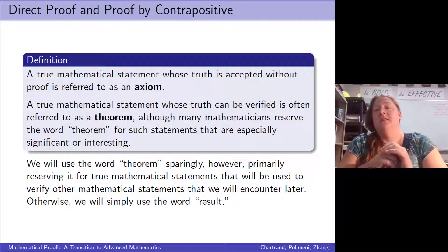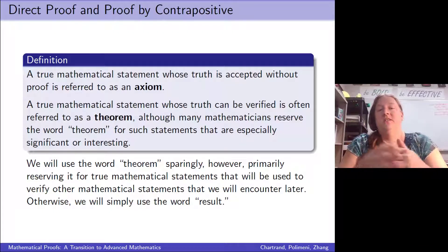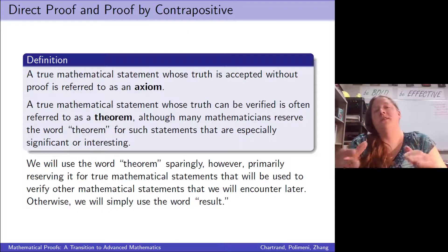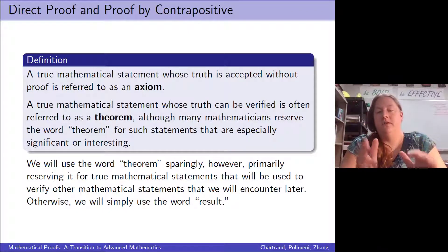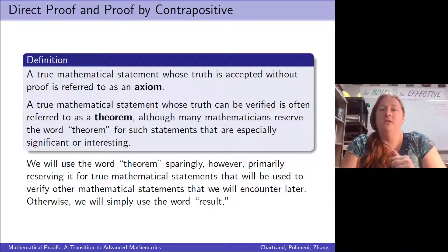Beyond axioms, there are things called theorems, and theorems are things that we need to verify with a proof — things we don't accept as true until we've shown that they are true. Theorems can come in a variety of sizes; however, when things are relatively small results, we generally save the word 'theorem' for the bigger things and call smaller results just 'results.' That's a tradition we'll stick to in this course.